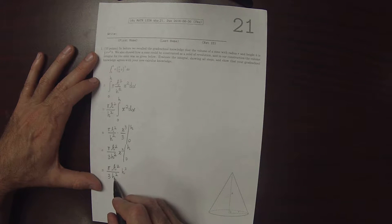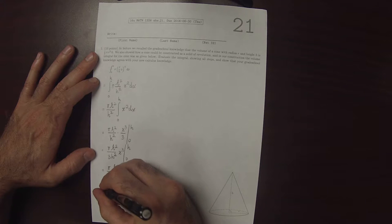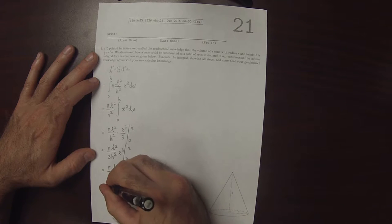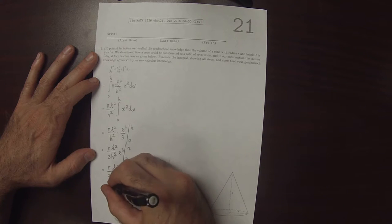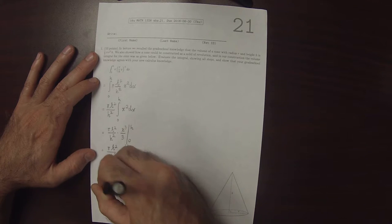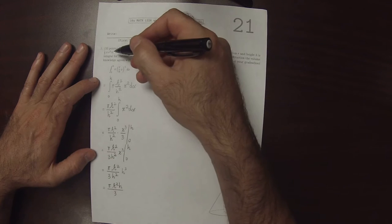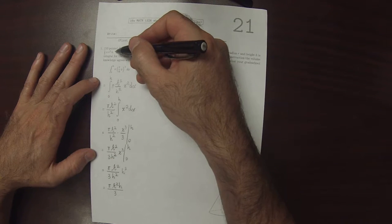So we have h squared in the denominator and h cubed in the numerator. So this is pi r squared h over 3, which of course is exactly what we wanted to show.